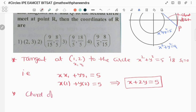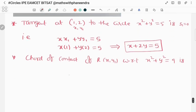So chord of contact of R at (x1, y1) with respect to x² + y² = 9 is, even chord of contact also, s1 = 0. That is xx1 + yy1 = 9.